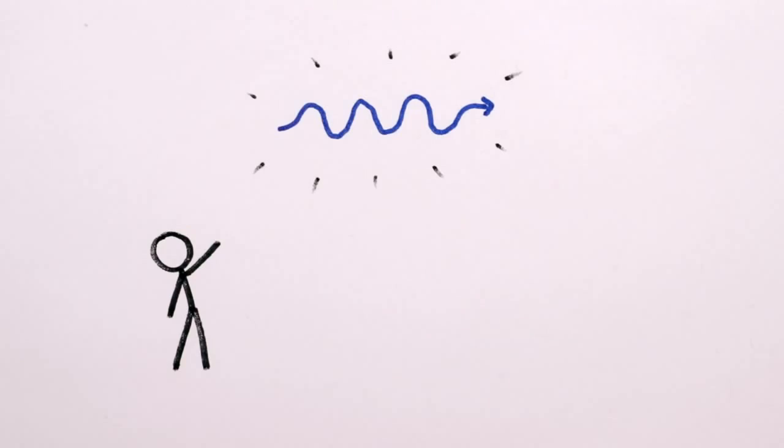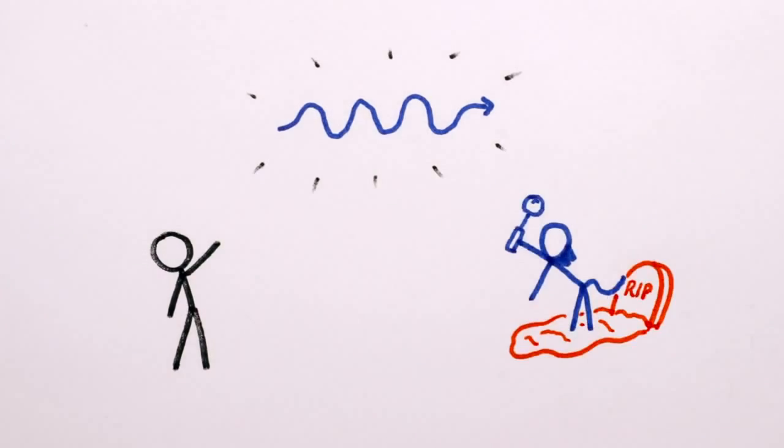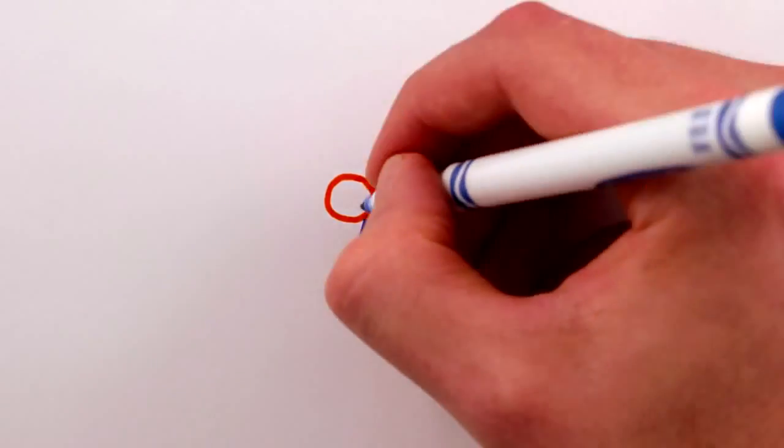So not only can we see light, now we can use Schrödinger's cat to measure Schrödinger's cat. Now that's quantum cat-ception.